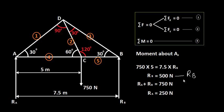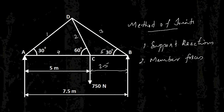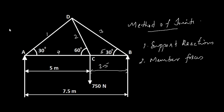RB is acting vertically upward. From the equation of vertical equilibrium: RA + RB = 750, so RA = 750 − 500 = 250 Newton. So we have completed the first step — we analyzed the support reactions. Now we need to find the forces in the members.